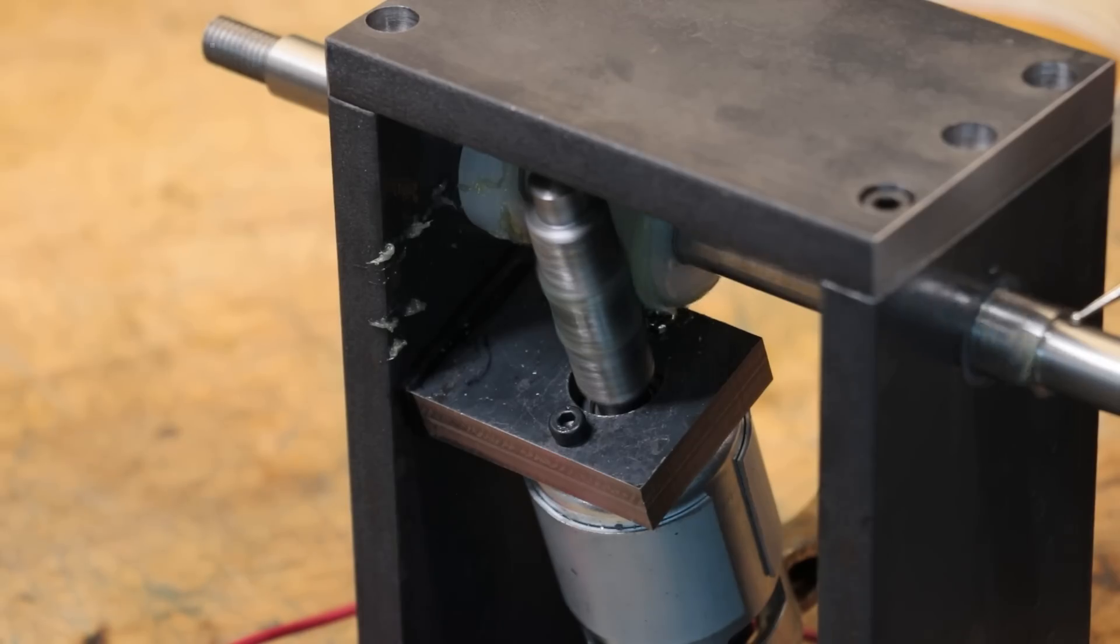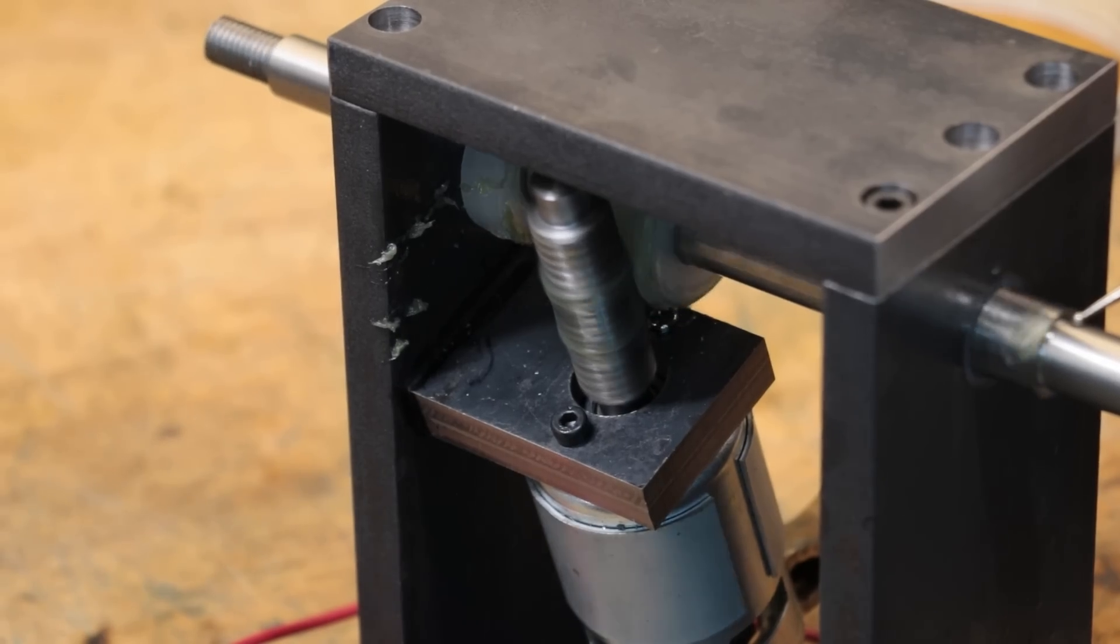From memory this is a 40 to 1 reduction but obviously since worm gears aren't known to be hugely efficient, I'd say we still get at least 20 times the torque out compared to what we put in. So even going by that, that is still a huge amount of torque.